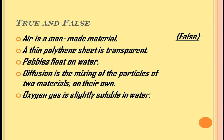Next, true and false. Air is non-material — answer is false. Second: a thin polythene sheet is transparent — answer is true, because a polythene sheet is transparent. Third: pebbles float on water — answer is false.